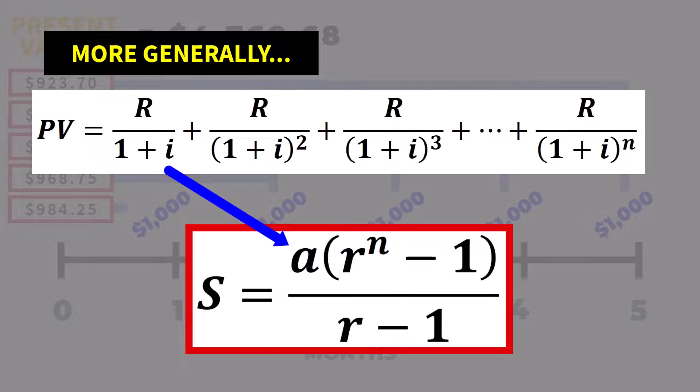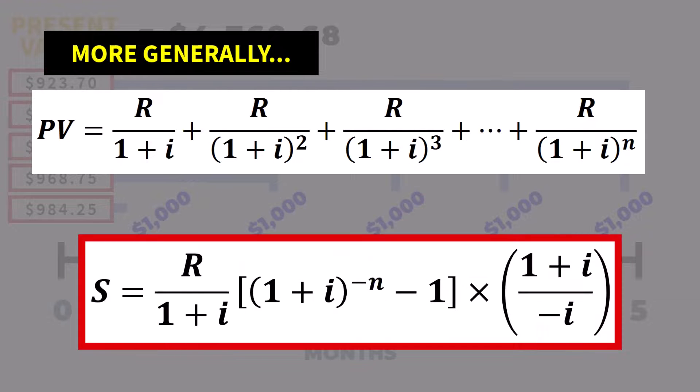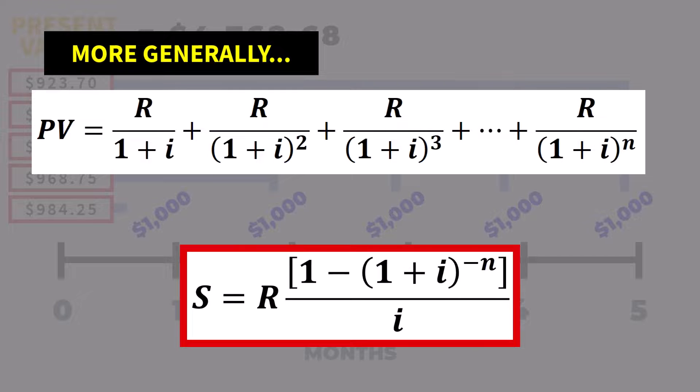Substituting capital R over 1 plus I as A, and 1 over 1 plus I as lowercase r into the formula, we get the resultant equation. With further algebraic manipulation, we eventually obtain the present value of annuity formula.